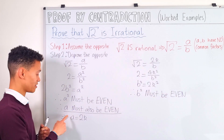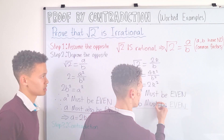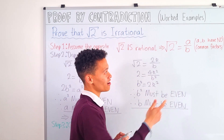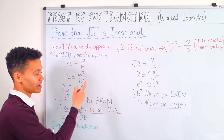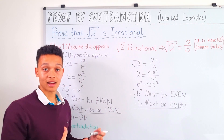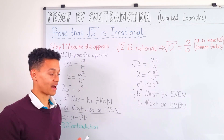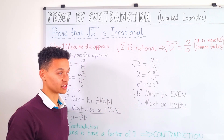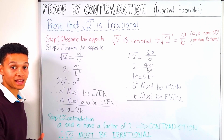Again, if a square number is even then its root must also be even, so b must be even as well. Now notice in our original assumption we said root 2 equals a over b, and that a and b can't have any common factors. But in our proof we found that a is even and b is even — they clearly have a common factor of 2. So we have a contradiction: a and b have a common factor of 2, therefore we have a contradiction.